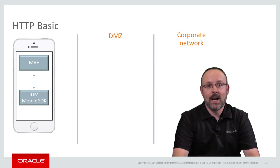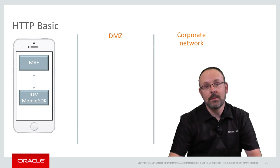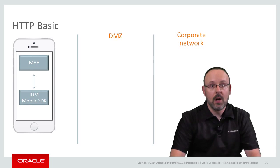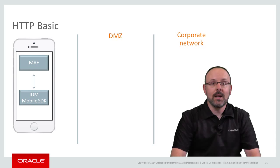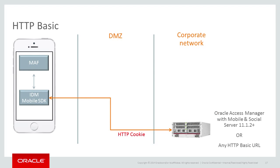The first scenario uses HTTP Basic authentication. It is fairly straightforward to implement and was already available in Oracle ADF Mobile, the precursor to MAF. The IDM Mobile SDK can authenticate users against Oracle Access Management Mobile and Social Server, or any HTTP Basic URL — for example, an ADF application deployed on WebLogic Server. Once the user is authenticated, the backend sets a cookie that will then be used for web service authentication. MAF applications can connect to secured web services directly or through a proxy such as Oracle API Gateway. API Gateway is not mandatory, but increases the security, performance, and reliability of web service deployments since it can perform service virtualization and can inspect network traffic for threats.